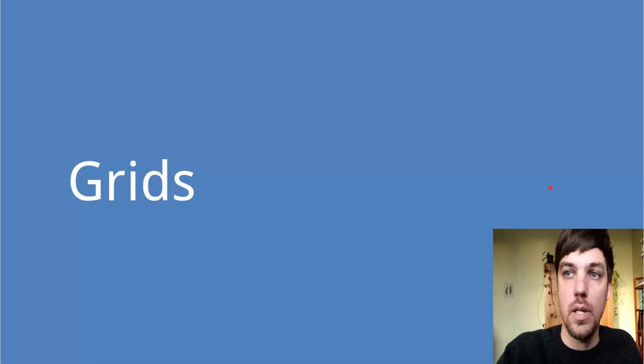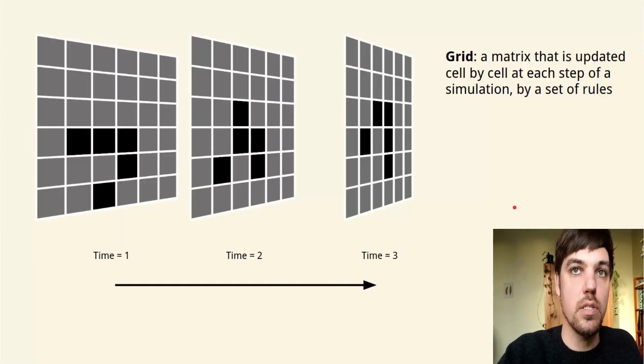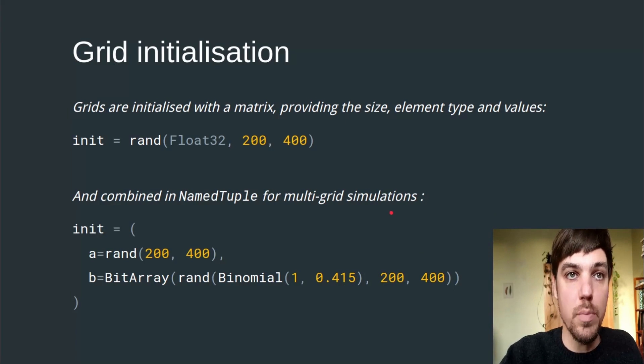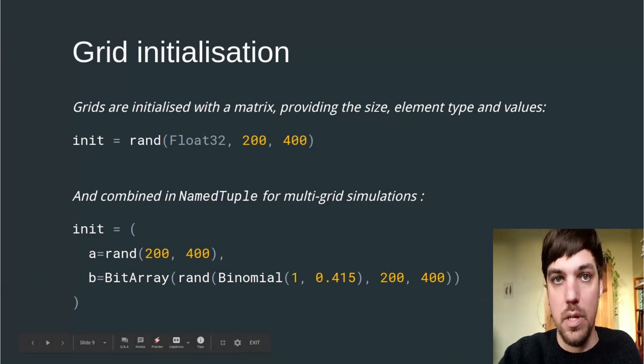The first concept is grids. A grid is basically a matrix that's updated cell by cell at each step of a simulation by some set of rules. Grids are initialized with a matrix providing the size, element type, and values. They can also be combined in a name tuple for multi-grid simulations, where you can have an A and B grid. They can be any types, they just need to be the same size.